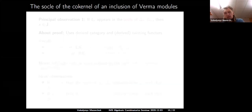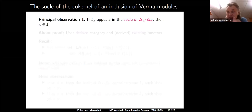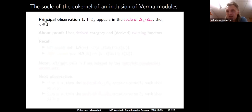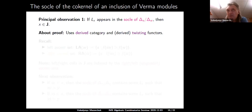Why is the penultimate cell important in our setup? Our first key observation is: if a simple module appears in the socle of the quotient Δ_e / Δ_w, then the index of that simple module belongs to the penultimate cell J. This has a non-combinatorial proof using manipulations with derived functors and the algebraic machinery of Category O, but it is true.